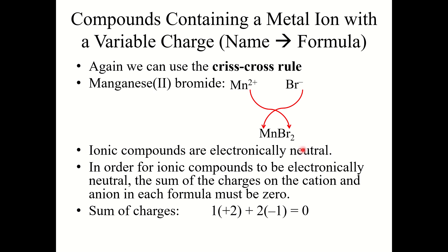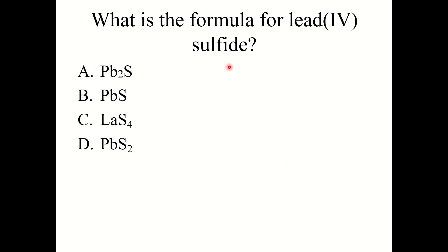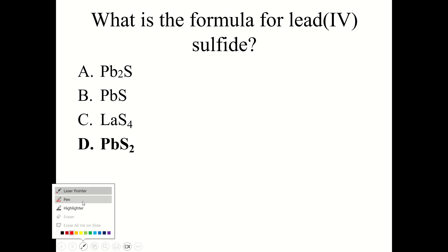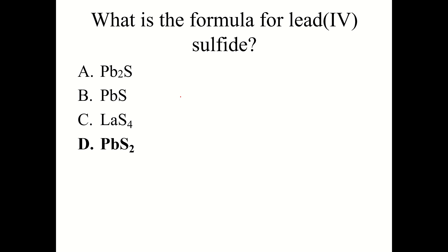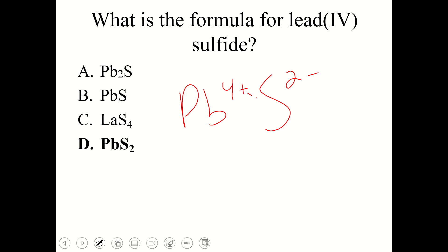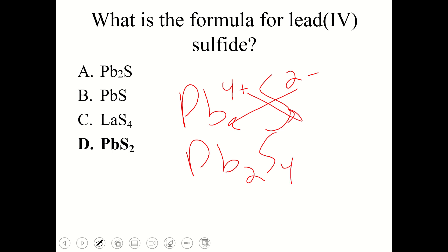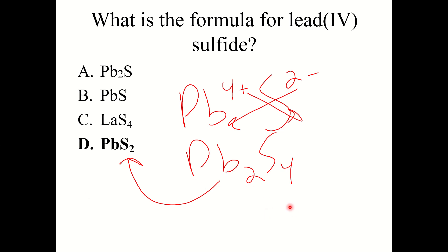Knowledge check: What is the formula for lead(IV) sulfide? The correct answer is PbS2. Lead is Pb with a charge of +4, and sulfide is −2. Crossing the charges initially gives Pb2S4, but you need to reduce that ratio down to PbS2. So PbS2 is the correct answer.